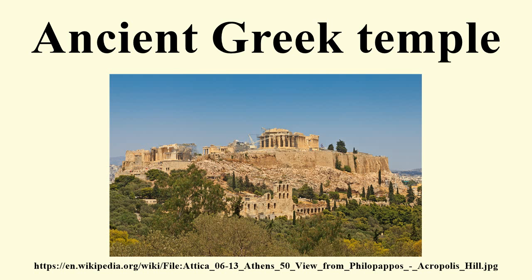Above the frieze was an intermediate member, such as the dentil of the Ionic or Corinthian orders. The cornice protrudes notably and consists of the geison and the cyma. On the long sides, the cyma, often elaborately decorated, was equipped with water spouts often in the shape of lion's heads.